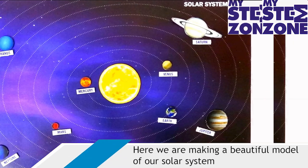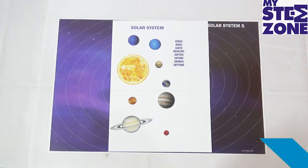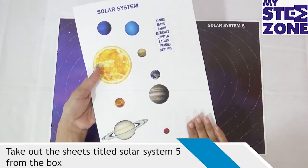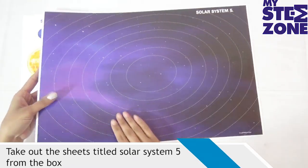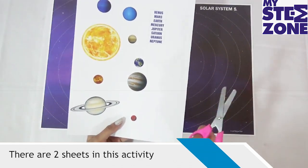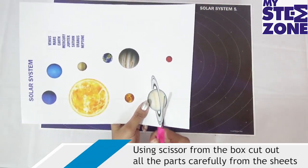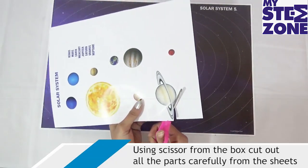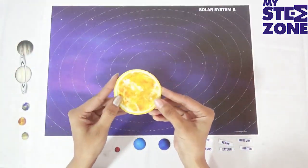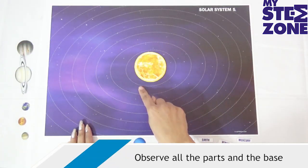Here we are making a beautiful model of our solar system. Take out the sheet titled Solar System 5 from the box. There are two sheets in this activity. Using the scissor from the box, cut out all the parts carefully from the sheets. Observe all the parts and the base.